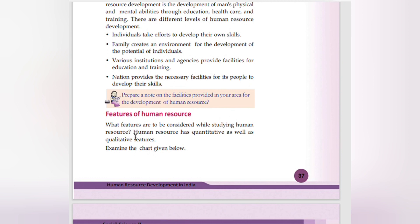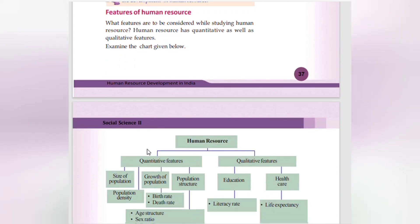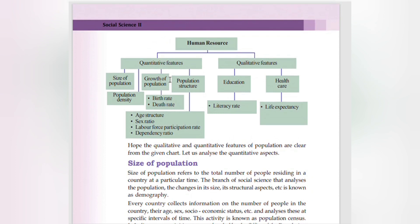Human resource has both quantitative and qualitative features. Quantitative features include size of population, growth of population, population structure, population density, birth rate, death rate, age-sex ratio, labor force participation rate, and dependency ratio. Qualitative features include education, healthcare, literacy rate, and life expectancy.